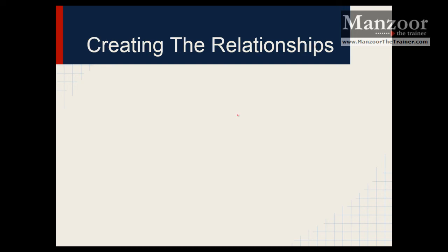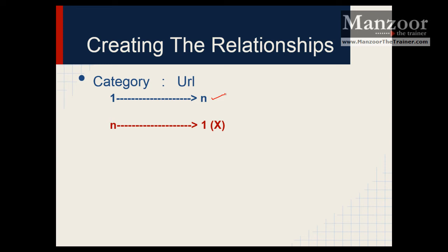Now we need to identify the relationship between objects. Looking at category and URL — the basic rule is to check one-to-N. One category can have N number of URLs — yes, that is correct. Now in reverse: can one URL belong to N number of categories? No, that is not valid. So there is no question of N-to-N here. We get a one-to-many relationship between category and URL.